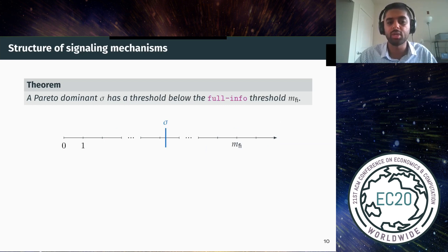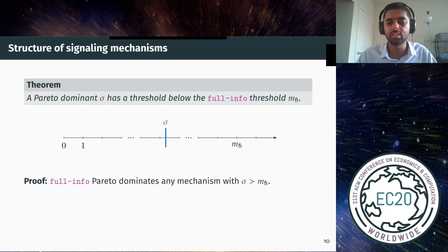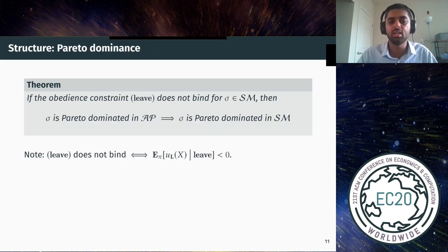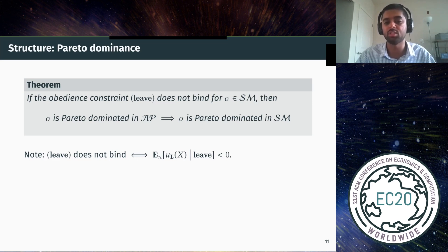The second structural result says that a Pareto dominant signaling mechanism must have a threshold below the full information threshold. This follows from the fact that if the mechanism has a threshold larger than the full information threshold, you can always truncate it, which increases the welfare of both types uniformly — so the full information mechanism Pareto dominates any mechanism with a higher threshold. The third structural result says that if the obedience constraint for the leave signal does not bind — meaning the expected utility upon receiving the leave message is strictly less than zero — then if that signaling mechanism is Pareto dominated in the class of admission policies, it must also be Pareto dominated in the class of signaling mechanisms.